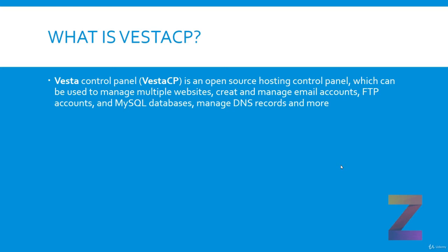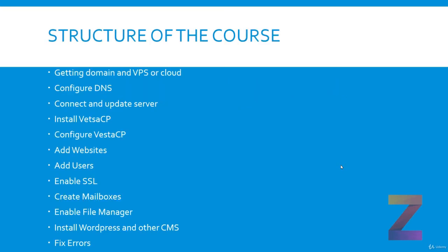Let's look at the course structure. In the second lecture you will learn to get a domain and VPS or cloud server. The second step is to configure DNS. After that you learn to connect to the Linux server and update it. Subsequently you will learn to install VistaCP, configure VistaCP, add websites, and add users to VistaCP.